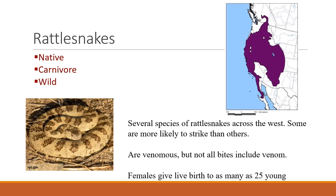One of the most feared reptiles on rangelands are rattlesnakes. They're native, carnivores, and wild. There are several species of rattlesnakes in the West, and some are more aggressive than others — the Western diamondback is known as a very aggressive species. They are venomous, but not all bites include venom; in some cases only 1 in 10 bites might include venom. So if you're struck, stay calm and try to get to help. Sucking out the venom or making incisions is never recommended — just stay calm and get to help. The females give birth to live snakes, as many as 25 young at a time.